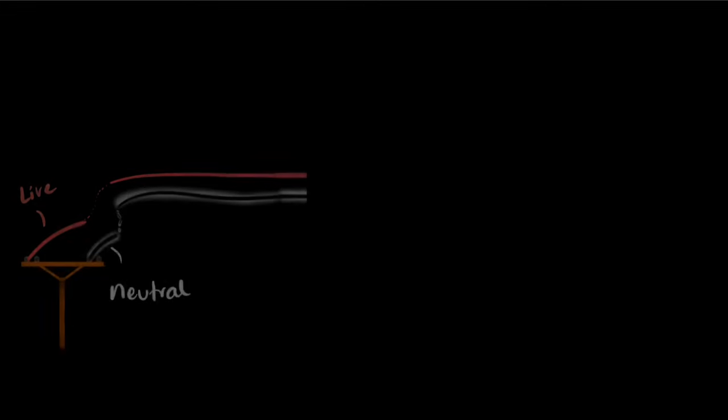Let's quickly look at your domestic circuits. So from the power station we have two wires, one called the live and another called the neutral, coming towards your house.